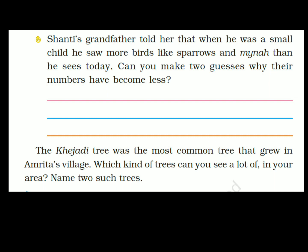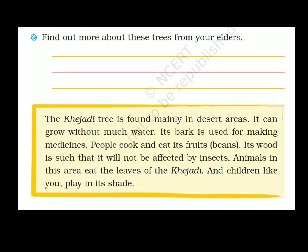The Khejati was the most common tree that grew in Amrita's village. The Khejati tree is found mainly in desert areas. It can grow without much water. Its bark is used for making medicine. People cook and eat its fruits. Its wood is not affected by insects. People and animals in this area eat the leaves of the Khejati, and children play in its shade. Khejati is truly a very useful tree. This is the end of the chapter. Thank you and have a nice day.